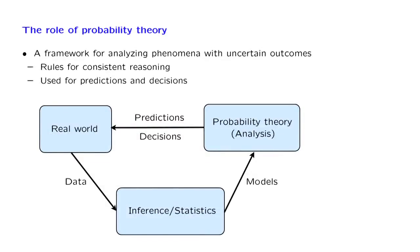And so, we have the following diagram that summarizes the relation between the real world, statistics, and probability. The real world generates data. The field of statistics and inference uses these data to come up with probabilistic models. Once we have a probabilistic model, we use probability theory and the analysis tools that it provides to us. And the results that we get from this analysis lead to predictions and decisions about the real world.